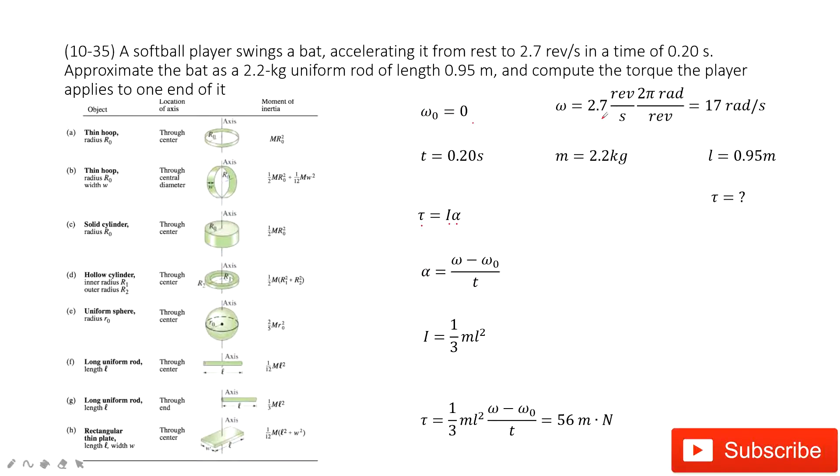The final angular velocity is 2.7 revolutions per second. We must convert to the unit radians per second. From rest to 2.7, time taken is 0.2 seconds. So from these three quantities, we can get alpha, the angular acceleration, by this function very easily.